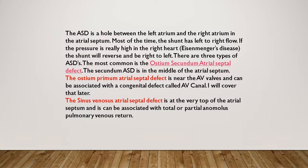The sinus venosus ASD can be associated with total or partial anomalous pulmonary venous return, which is one of the most difficult topics to cover. There is one more type that's rarely mentioned: the coronary sinus ASD, where the flow goes into the coronary sinus. The only way to determine whether there is a coronary sinus defect is to image the coronary sinus, probably in the four-chamber view, and see if it's dilated.